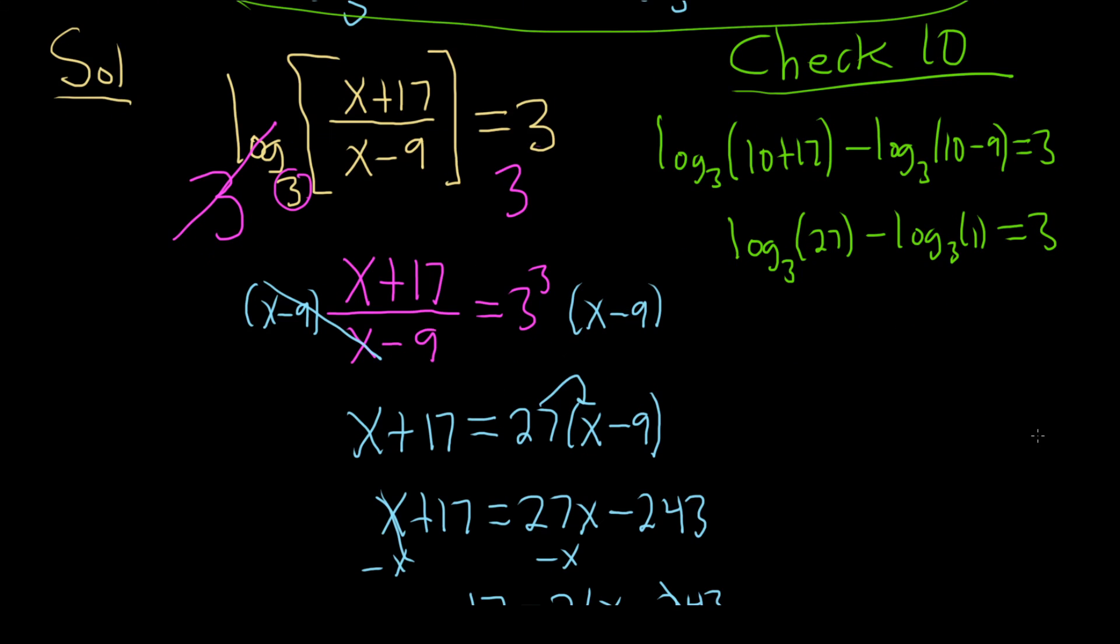This is log base 3 of 27 minus log base 3 of 1, and this should be equal to 3. So log base 3 of 27, how do you do this? You look at this and say, 3 to what power is 27? So 3 minus log base 3 of 1. You ask 3 to what power is 1? 0. So 3 minus 0 is equal to 3. So 3 equals 3. So 10 is actually the answer.